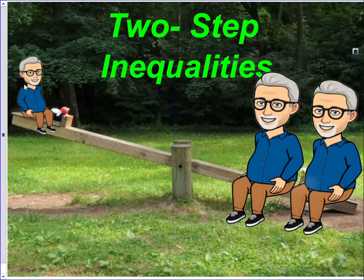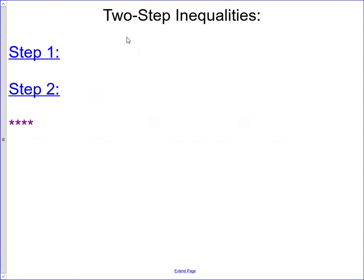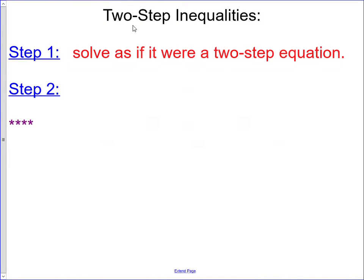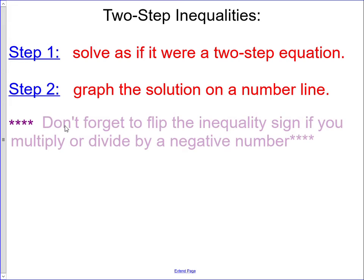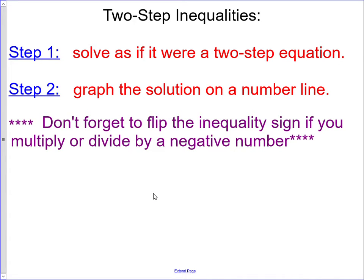Today we're going to talk about two-step inequalities and how to solve them. The first step is to solve it as if it were a two-step equation: undo any addition or subtraction first, then undo any multiplication or division. Then we're going to graph the solution on a number line. An important note: don't forget to flip the inequality sign if you multiply or divide by a negative number.